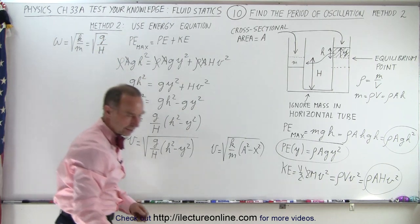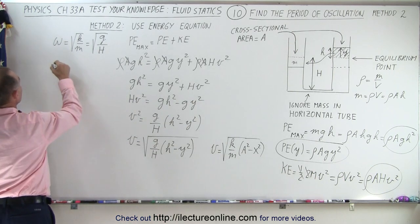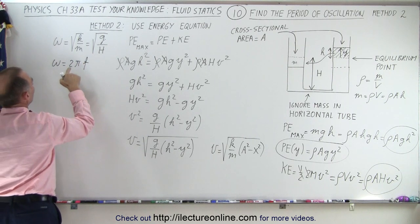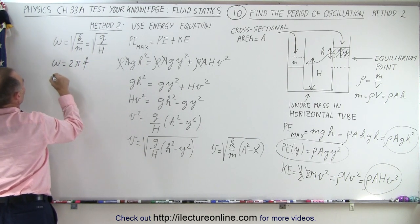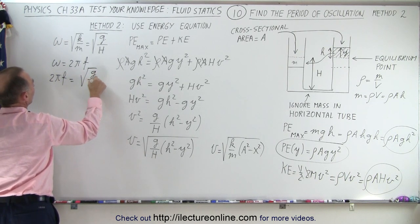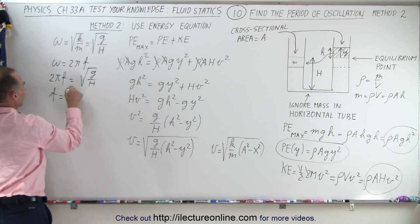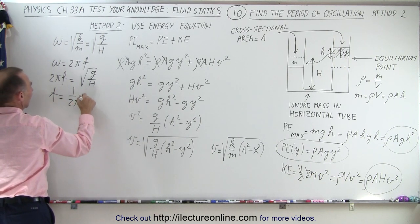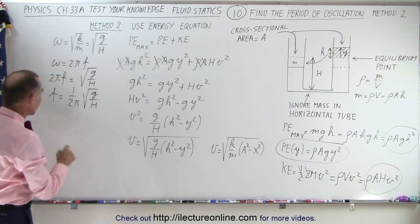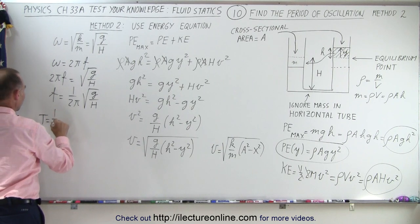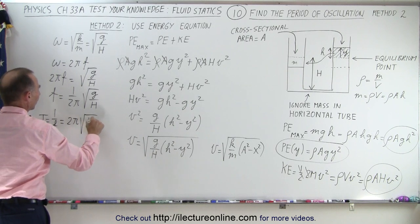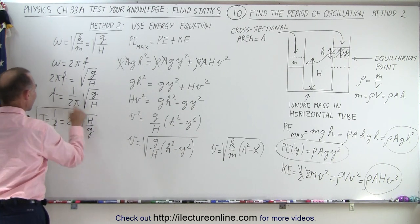We know that omega equals 2π times the frequency, so 2π times frequency equals the square root of G over H. That means frequency equals 1 over 2π times the square root of G over H. And finally, converting to the period — which equals 1 over frequency — the period is equal to 2π times the square root of H over G.